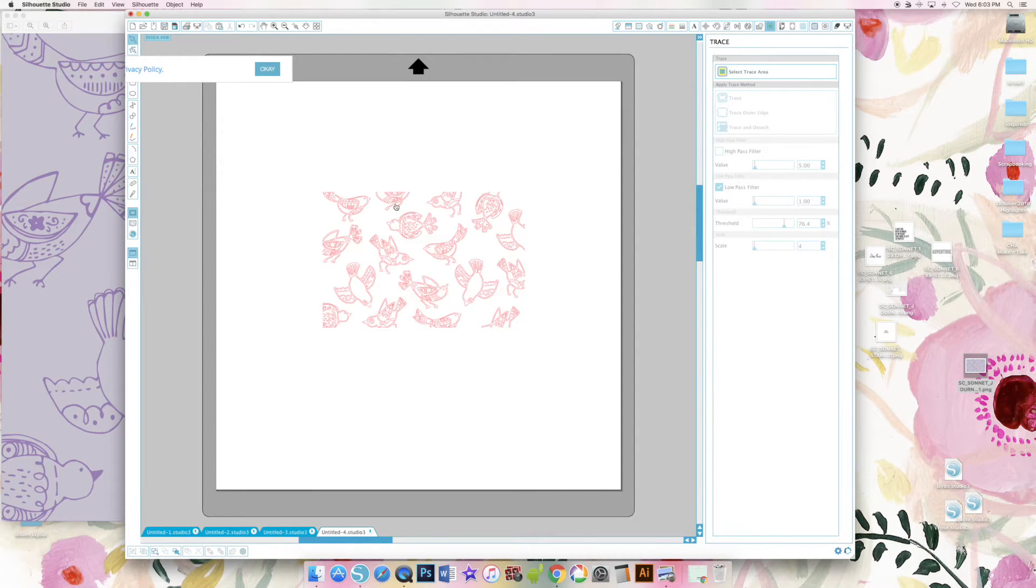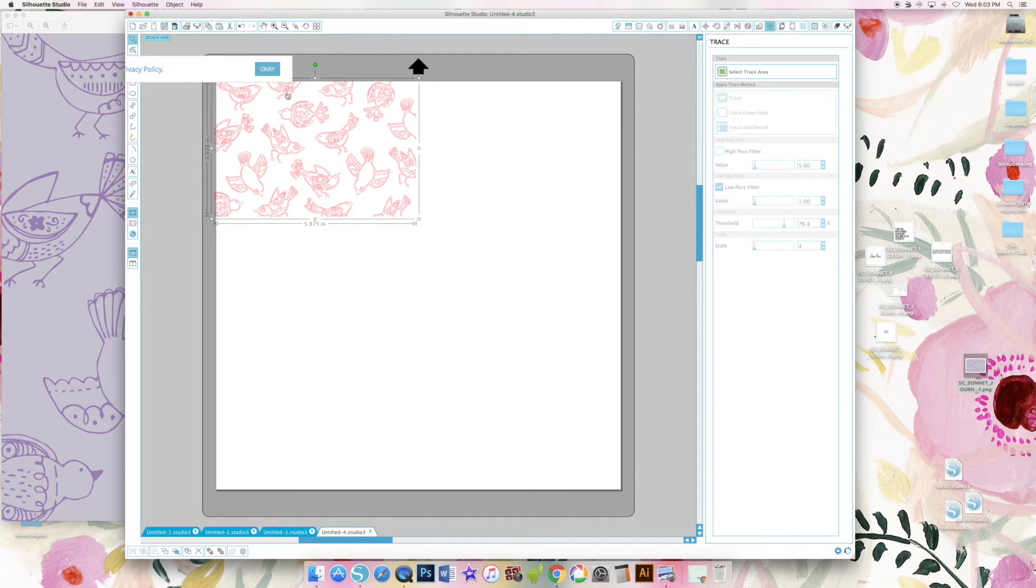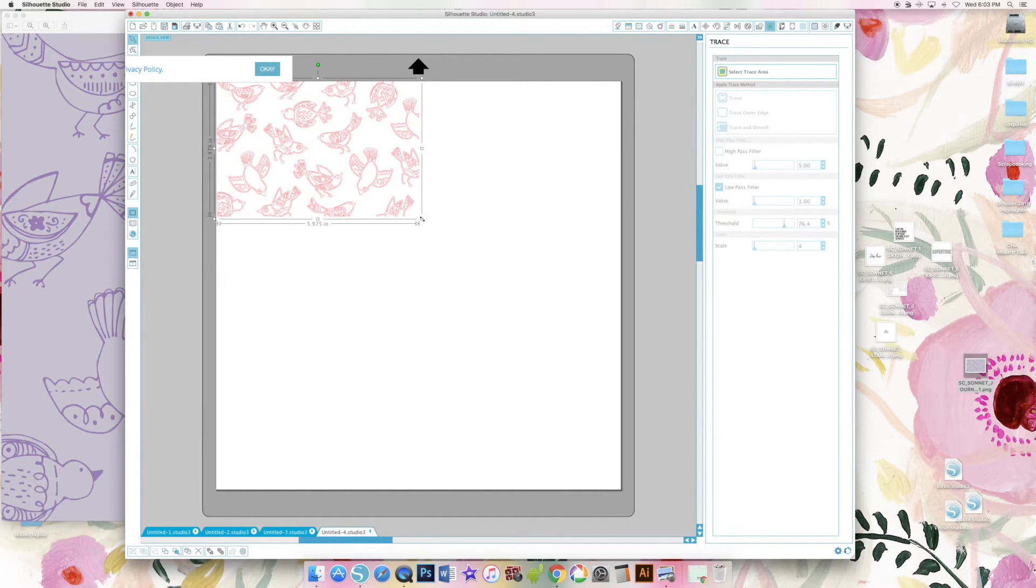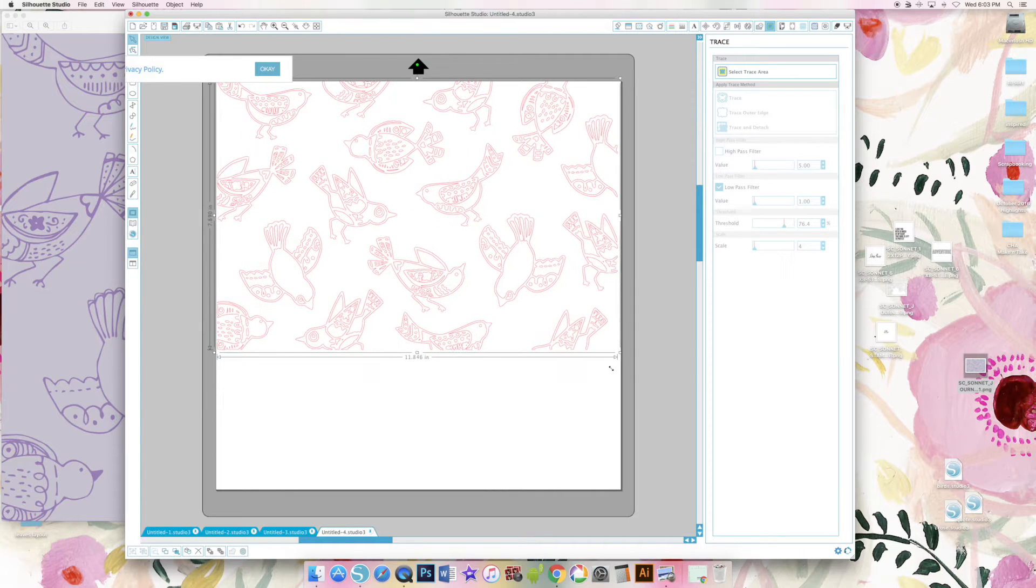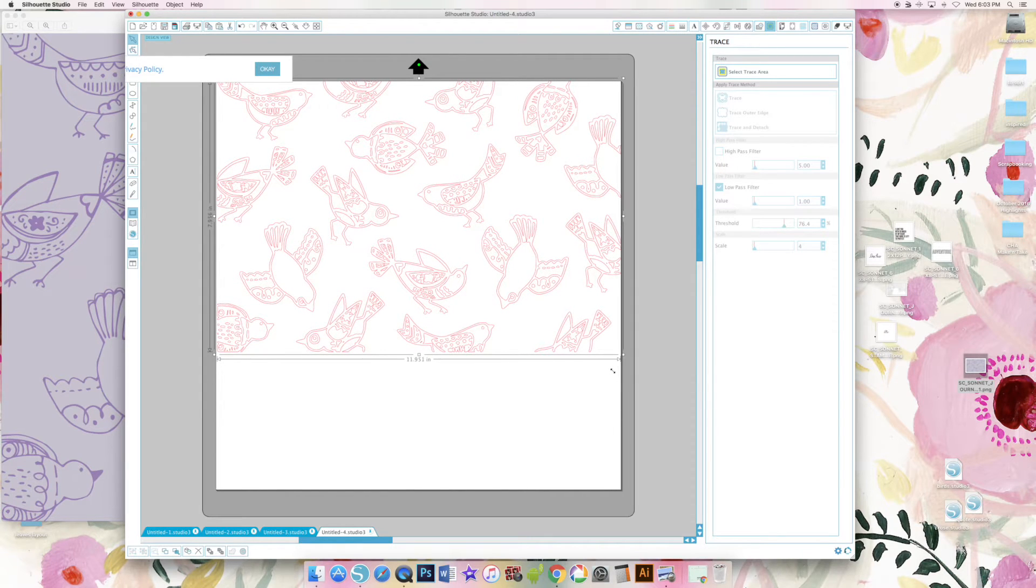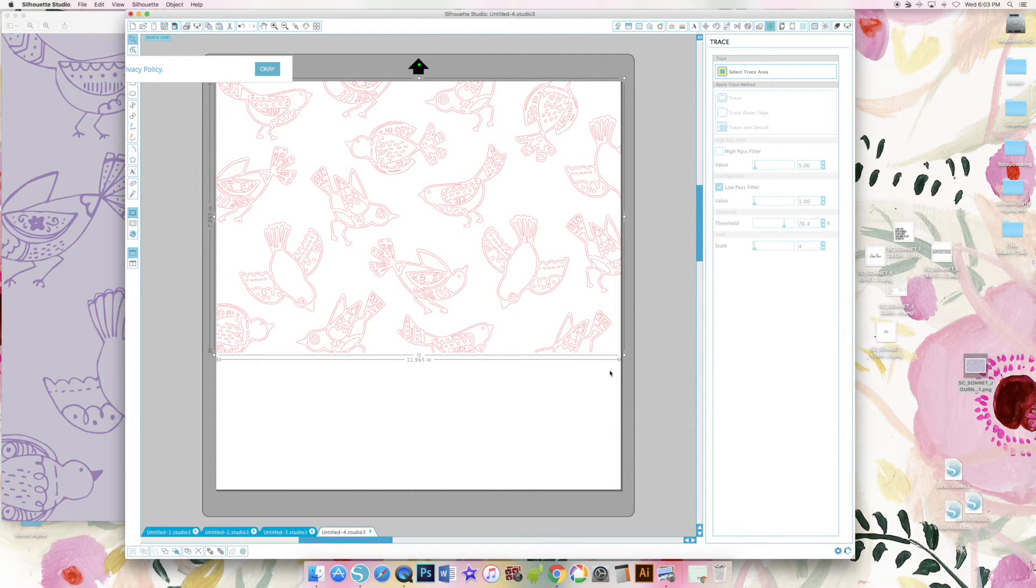So click trace and then I'm going to enlarge it so it covers the entire top two-thirds or so of a cut mat. And then I will go ahead and cut it from white cardstock.